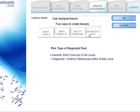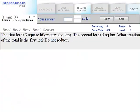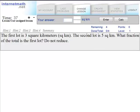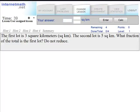Now let's see Internet Math in action. Here is a basic fraction problem. The first lot is 3 square kilometers. The second lot is 5 square kilometers. What fraction of the total is the first lot? Do not reduce.